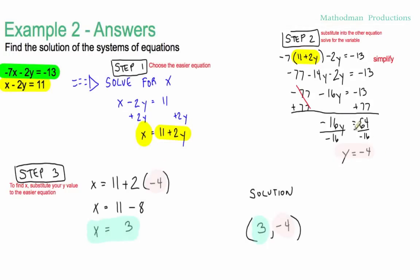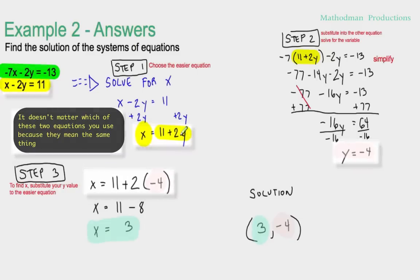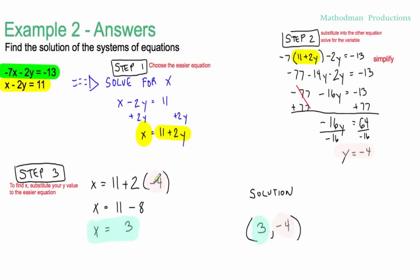The last step: in order to solve for x, substitute your y value into the easier equation. We said the yellow one was easier. So we get x equals 11 plus 2; instead of y, I use negative 4. Simplify from there and you get x equals 3.